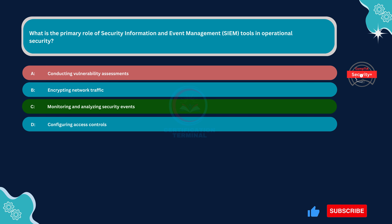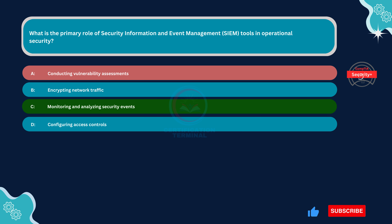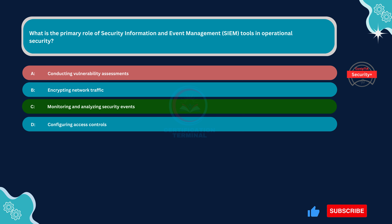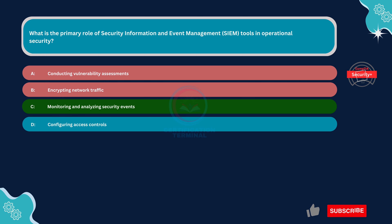Option A, conducting vulnerability assessments, is incorrect. While vulnerability assessments are an essential component of operational security, they are distinct from the primary role of SIEM tools. Vulnerability assessments involve identifying and assessing weaknesses in systems, networks, and applications to proactively mitigate risks. While some SIEM tools may integrate with vulnerability assessment tools, their primary function is not to conduct vulnerability assessments.